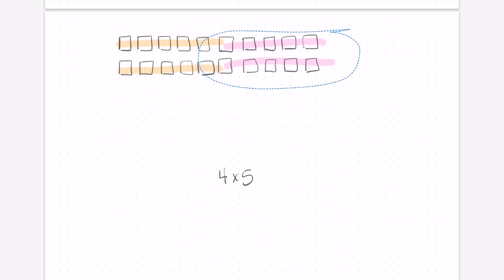Have we added or taken away any of the objects? No, we have just rearranged them. And now what we have is an array with 2 rows of 10. So basically what we did was we halved the number of rows, and we doubled the number of objects in each row.